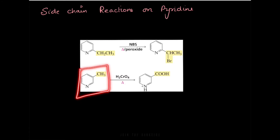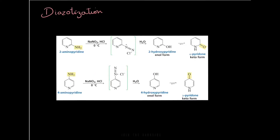Similarly, when you have an alkyl group on benzene it can be oxidized to a carboxylic acid, and the same thing can happen with pyridine — the alkyl group on pyridine can be oxidized to a carboxylic acid. Regarding the diazotization reaction: just as anilines undergo diazotization, aminopyridines can also undergo diazotization. Here, 2-aminopyridine reacts with nitrous acid, which is generated by reacting sodium nitrite in HCl at 0°C.